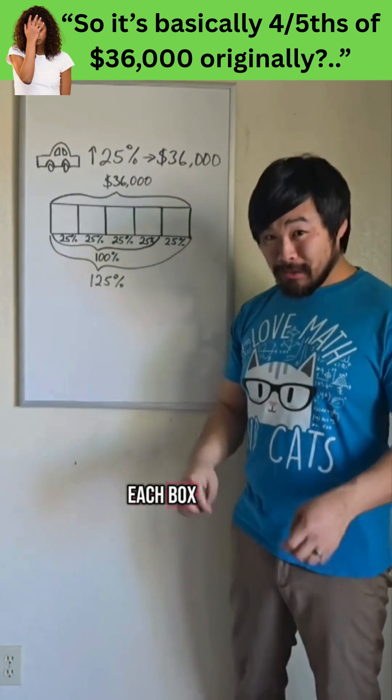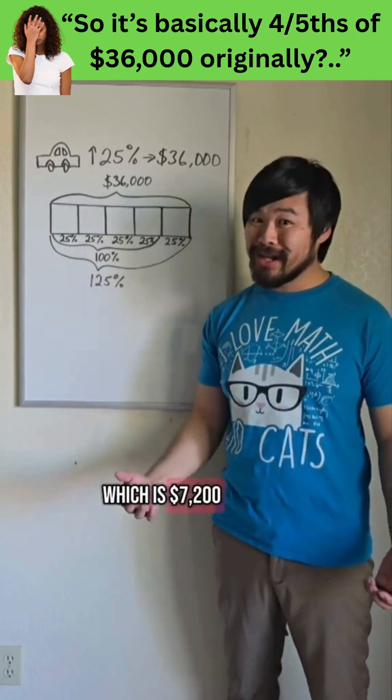So to figure out what's in each box, we divide $36,000 by 5, which is $7,200.